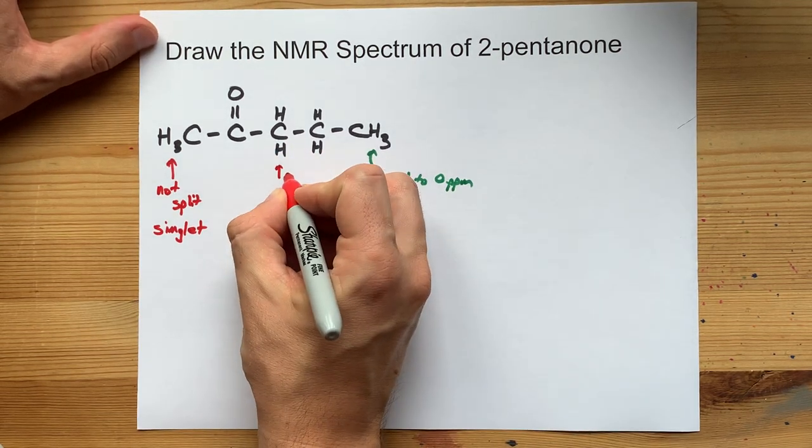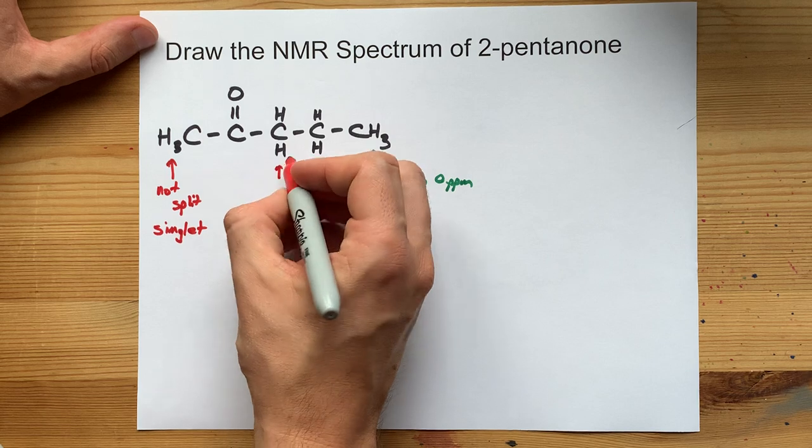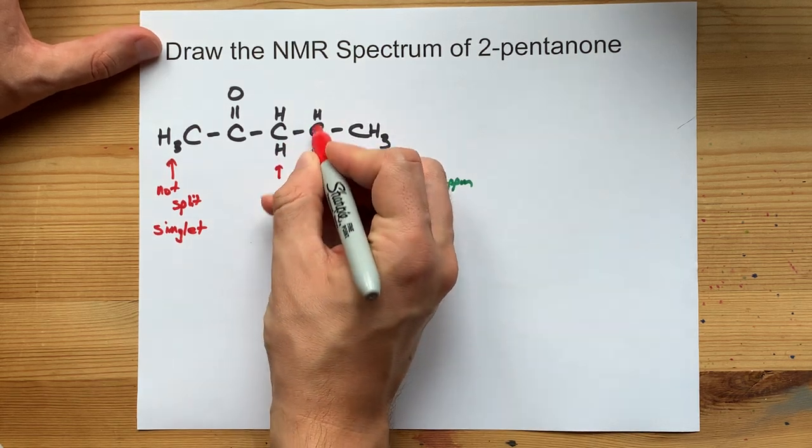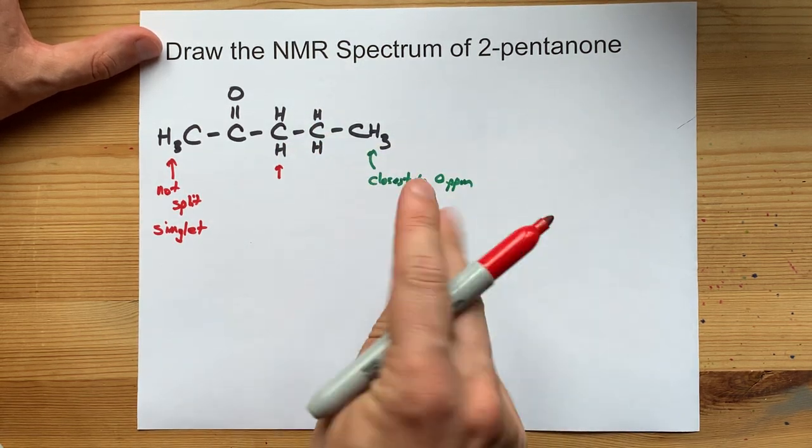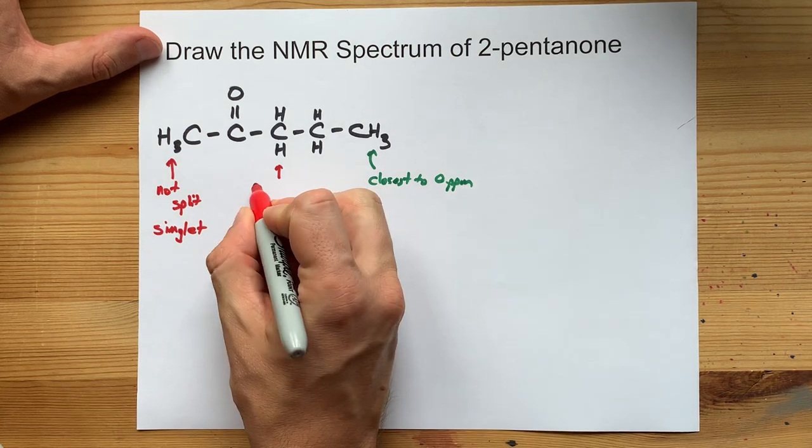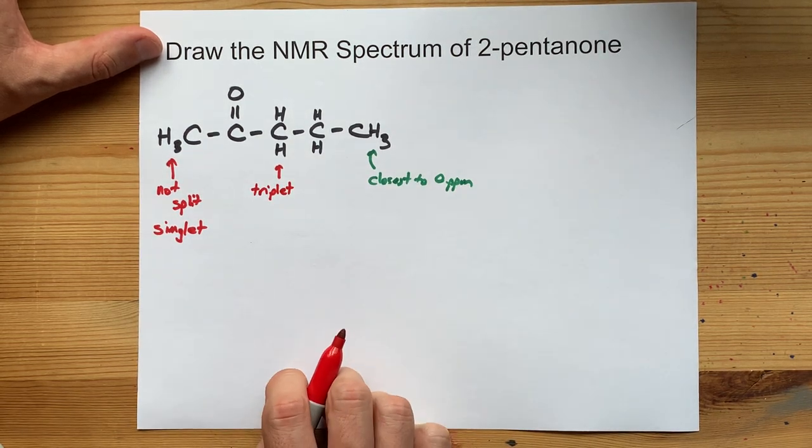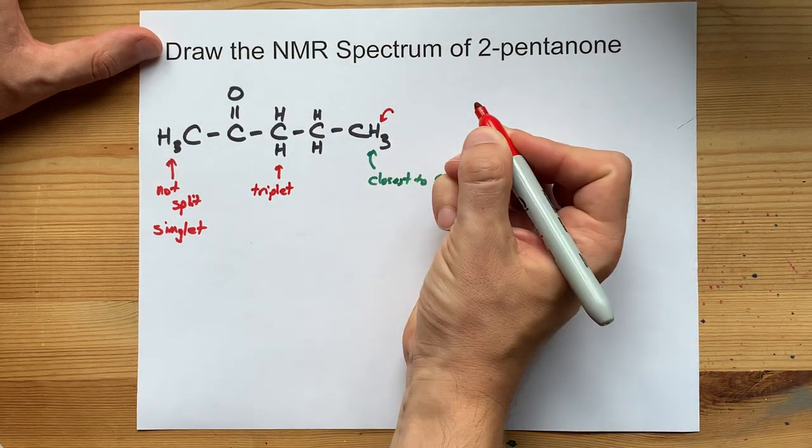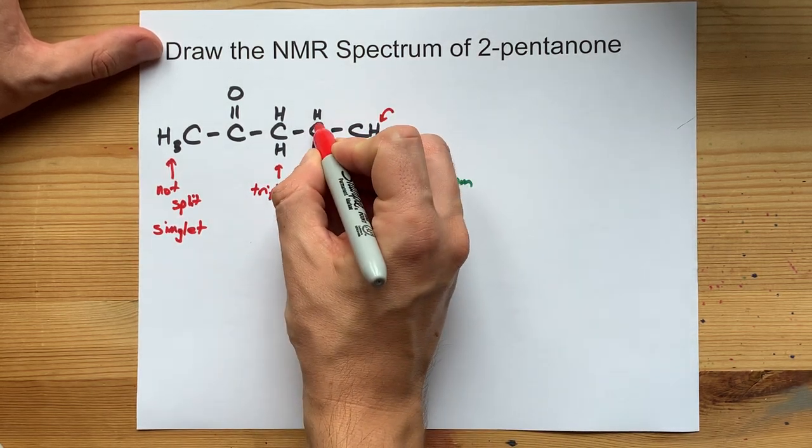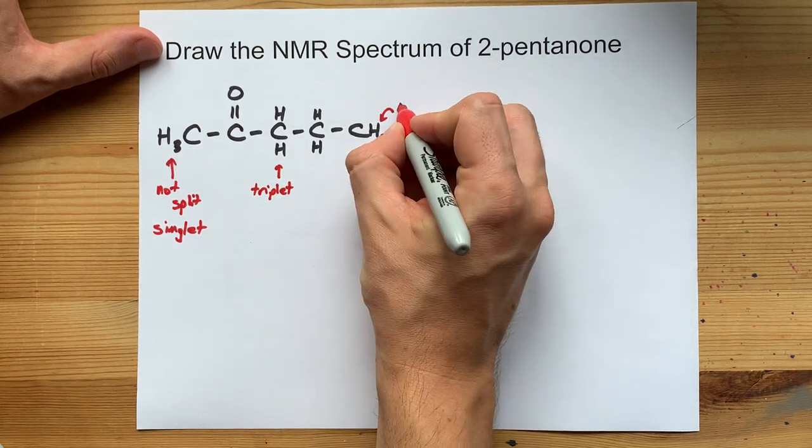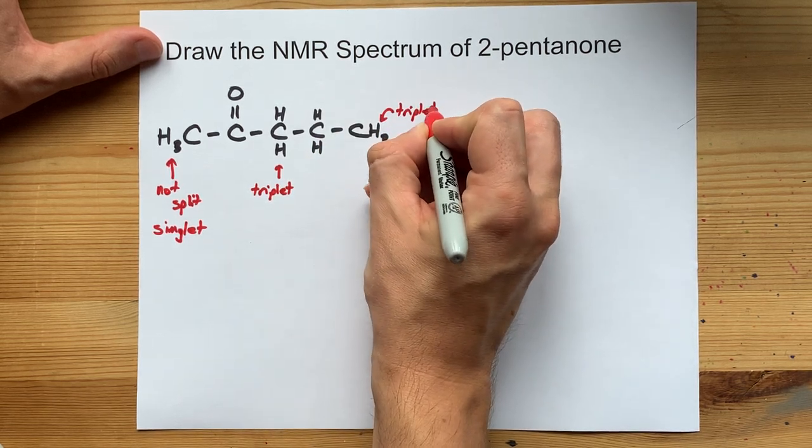These two hydrogens, which are equivalent, are adjacent to two other hydrogens. That means they're going to be split twice. And once they're split twice, it makes a triplet. Similarly, these three hydrogens are adjacent to just two others. So it's going to form a triplet as well.